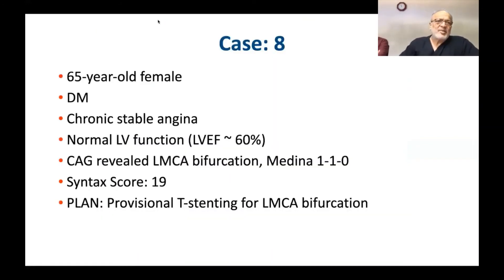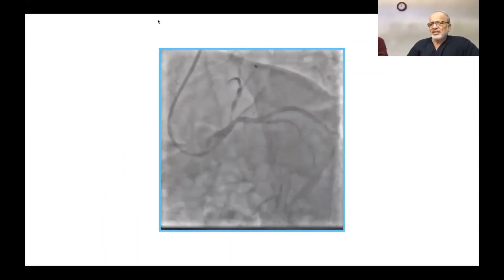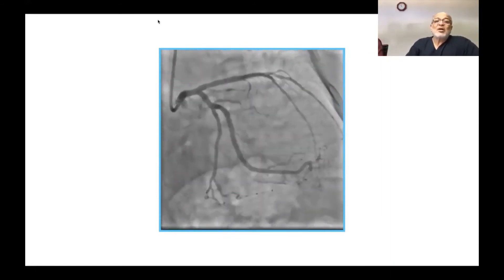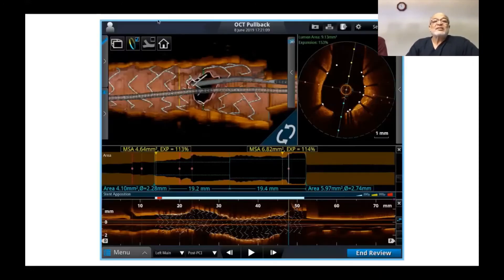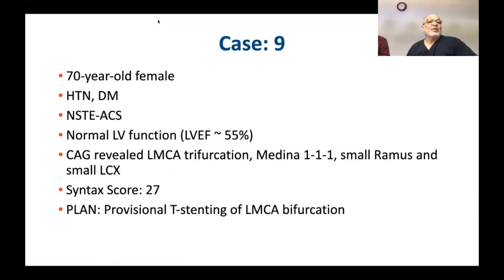A 65-year-old female, diabetic, chronic stable angina, normal ventricular function, LMCA bifurcation Medina 110, syntax score 19 — provisional T-stenting for left main bifurcation was planned. A very complex case with patient refusing surgery, but we managed with our strategy. It was again a link-connecting carina and proximal crossing, and that is why there were some struts hanging at the side branch.